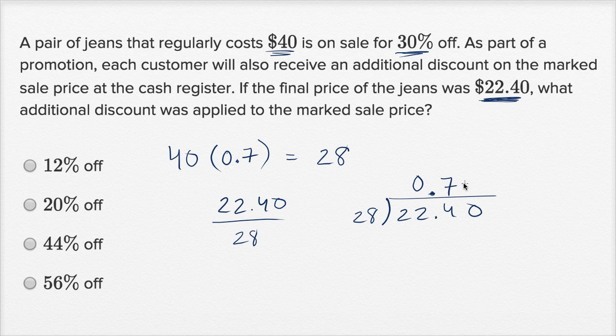So it goes seven times. Seven times eight is 56. Seven times two is 14, plus five is 19. And then if we were to subtract, let's see, we could make this a 14, regroup from here. This would be a one, but then we regroup from here. This would be an 11. 14 minus six is eight. 11 minus nine is two. Okay, so we actually could have gotten one more in there. So let's see, this is going to go, 28 goes into 224 exactly eight times.